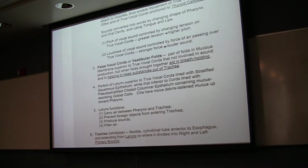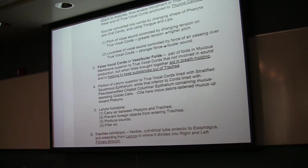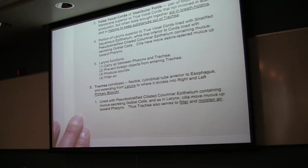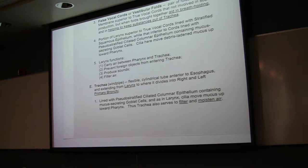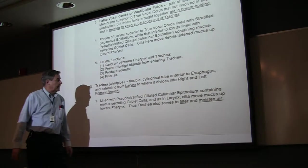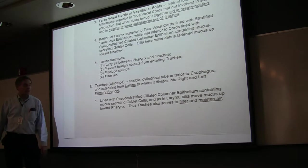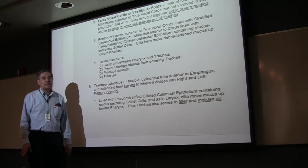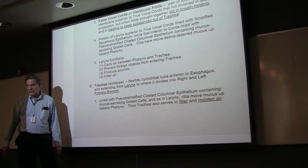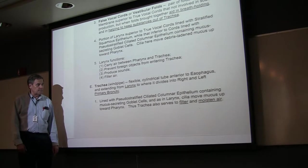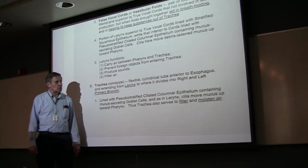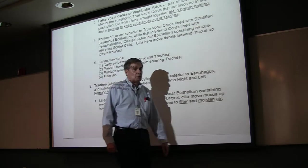The trachea is just inferior and attached to the larynx. It is supported by cartilage. And of course, it's going to branch into the right and left primary bronchi, which carry air to and from the right and left lungs. It, like the lower part of the larynx, is lined with pseudostratified ciliated columnar epithelium. You've got the mucus-secreting goblet cells here like you've seen before. So it acts to filter and moisten the air as well.